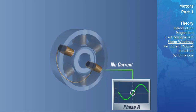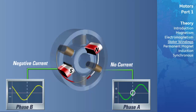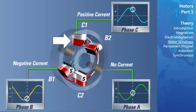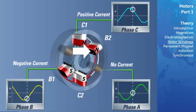Let's choose a start time when there is no current in phase A. At this time, phase B has current flow in the negative direction, and phase C has current flow in the positive direction. According to our convention, C1 and B2 are north poles, while C2 and B1 are south poles. The magnetic lines of flux will leave at the north pole of C1 and enter at the nearest south pole, B1. Magnetic lines of flux will also leave B2 and enter the nearest south pole at C2.